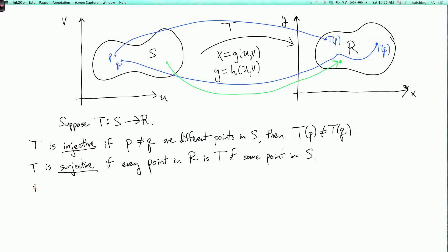And finally, we say that T is bijective or a bijection. Sometimes this is also called a one-to-one correspondence if T is injective and surjective.